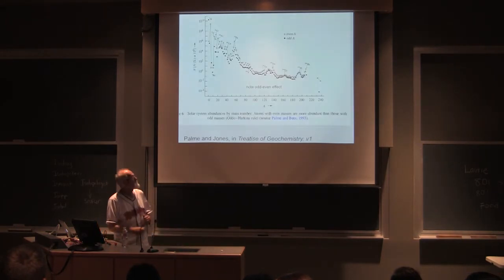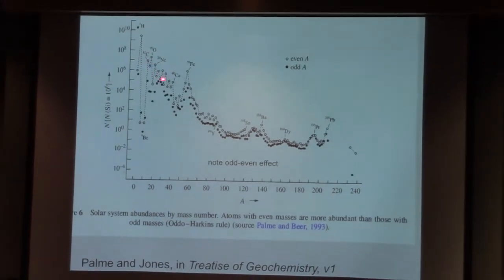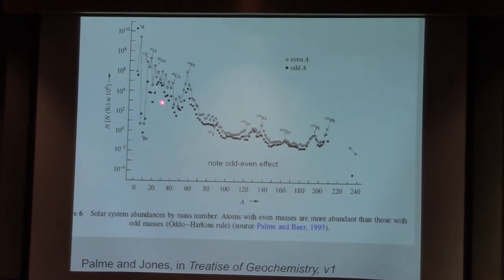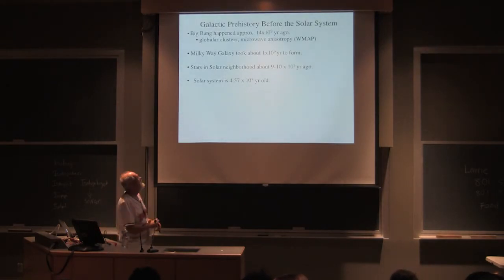So this is the abundance of elements in our solar system. We see these even-even. So these are all even-evens. And these are even-odd or odd-evens as we go down this path. Let's go now see what happens, how we do all of this.